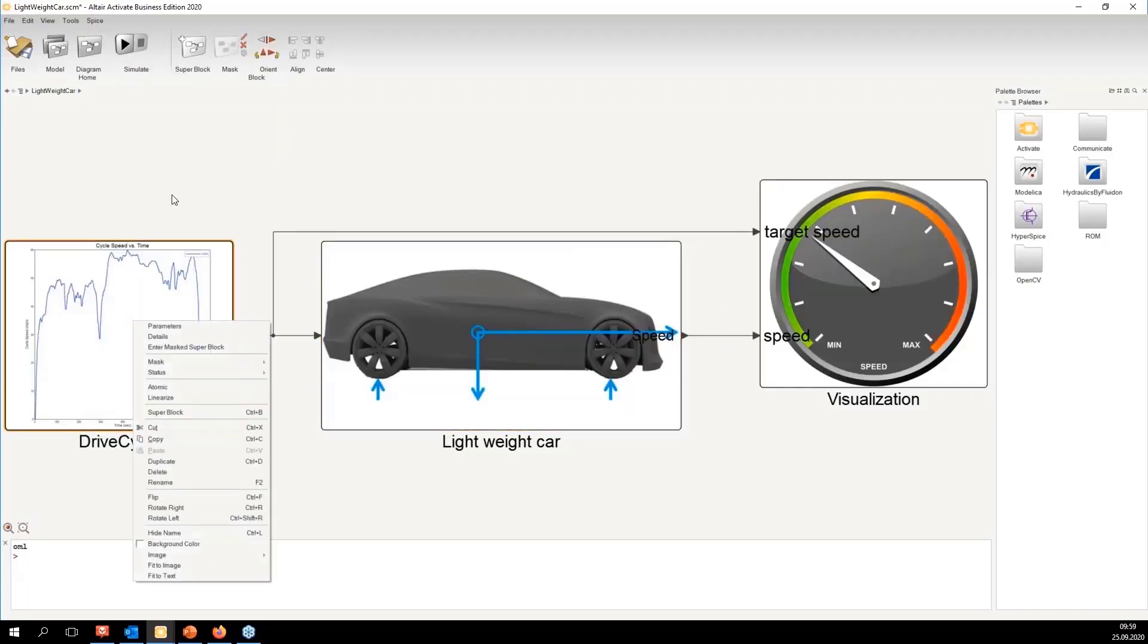What you saw in the slides, which is this part of the model, but we also have the drive cycle. Now, I'm gonna show what is a mask. You can see here, I made a double click on this super block, and this is an actual mask. And here we can choose between a real drive cycle and an artificial drive cycle.